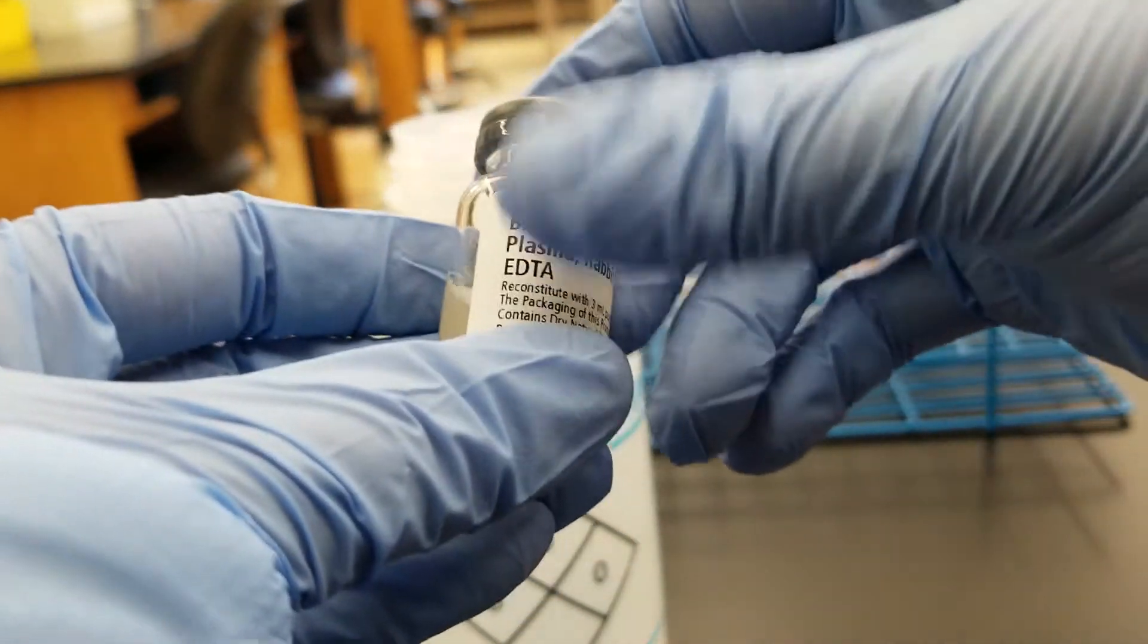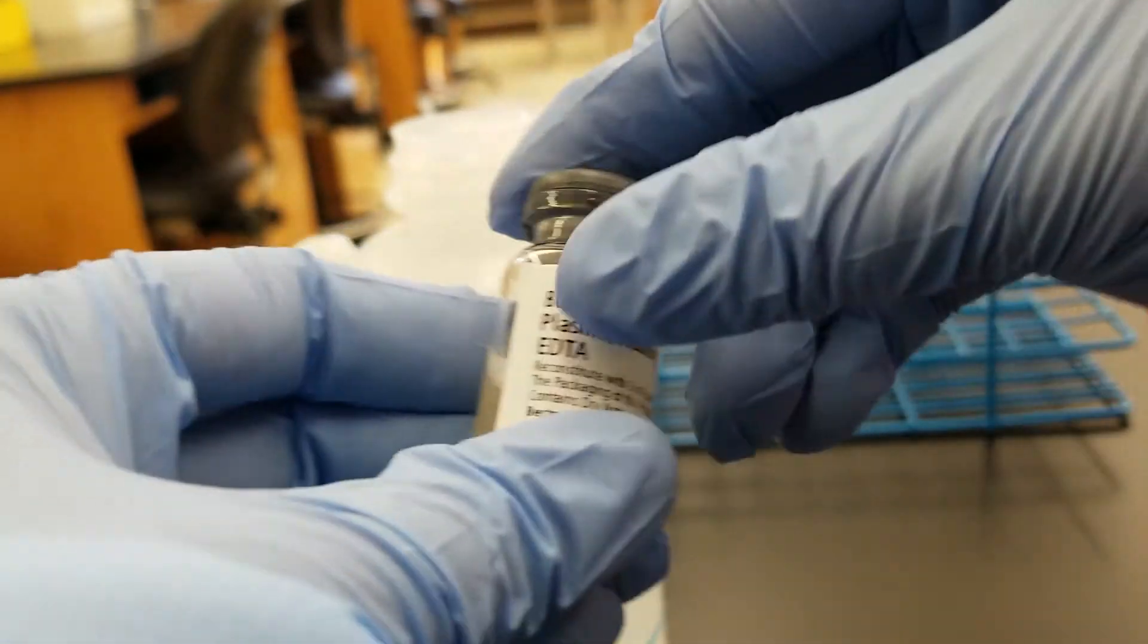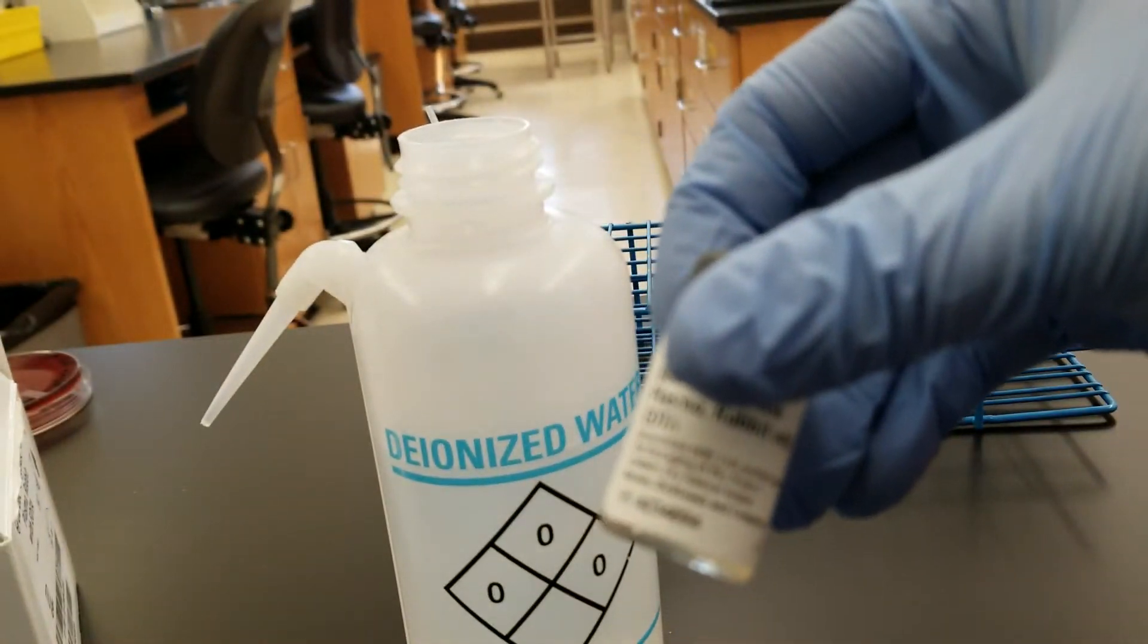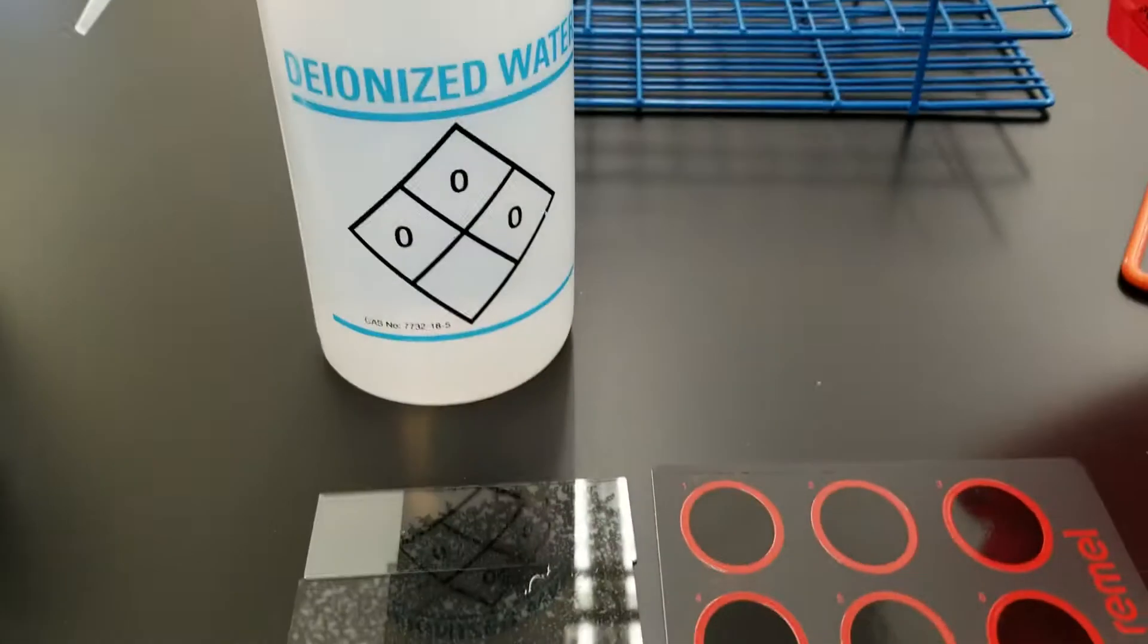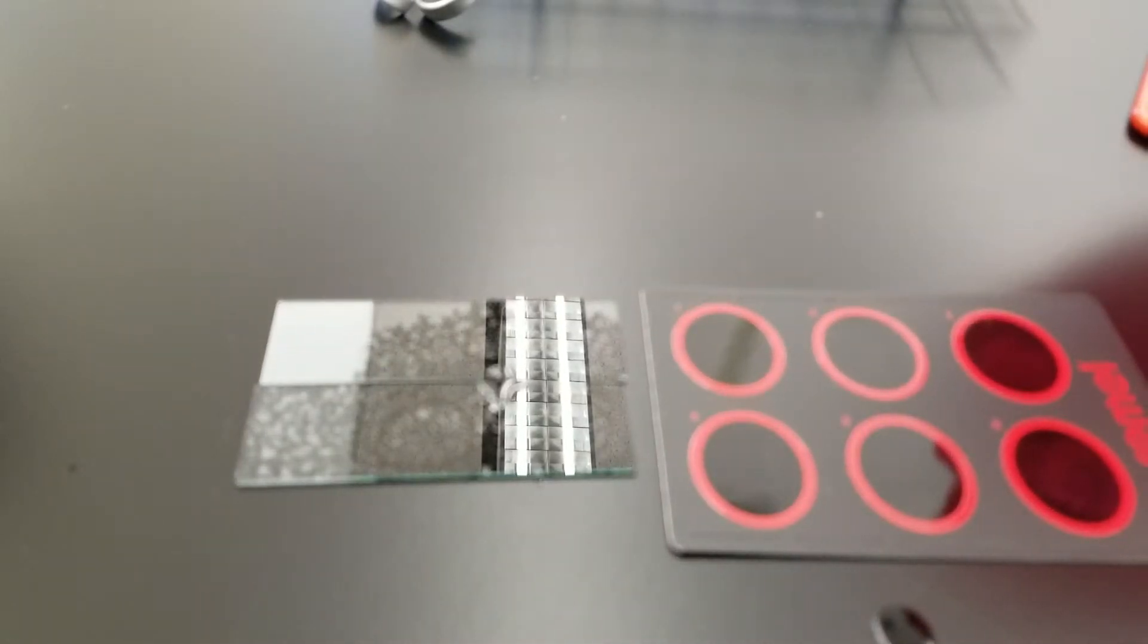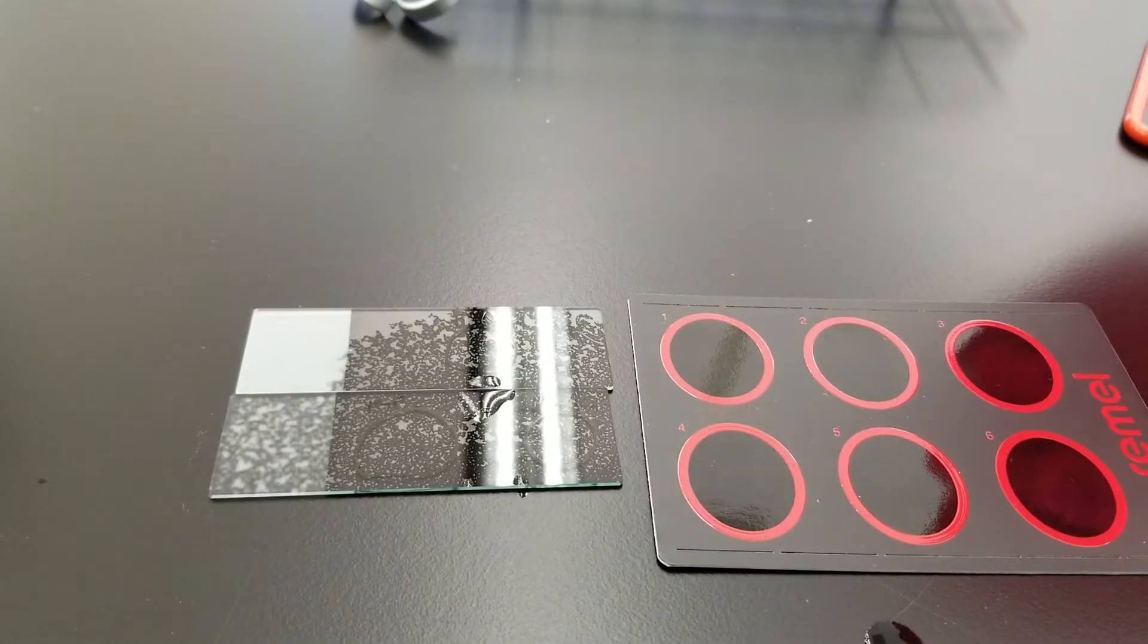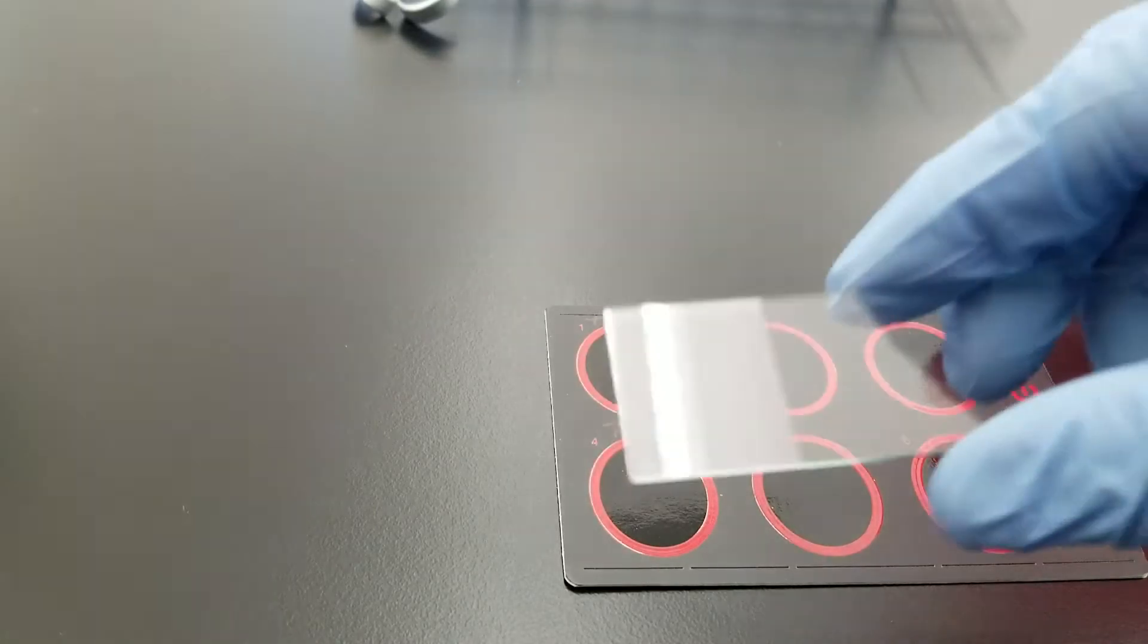You're going to label on the glass or the label, and you're going to label the date, the time, and your initials, and you let it set for 30 minutes. I already have one that is made up so we can go ahead and continue on with our experiment. But now this is wet, so I'm going to change those slides. You want to get clean slides.